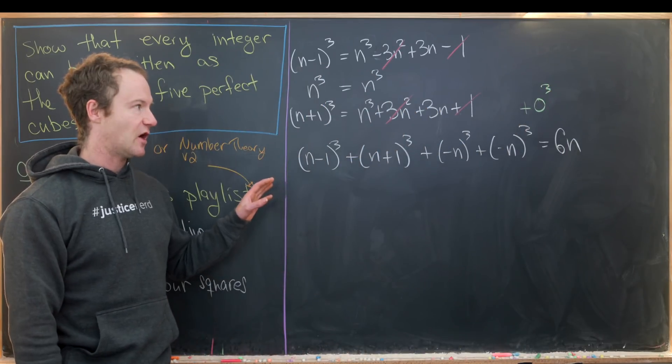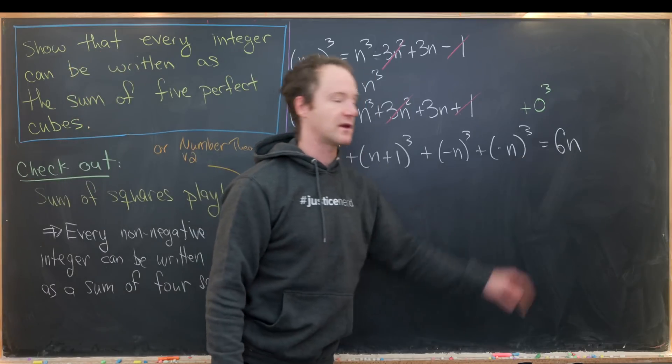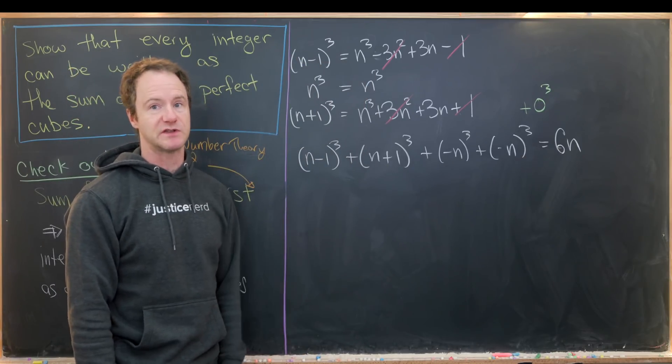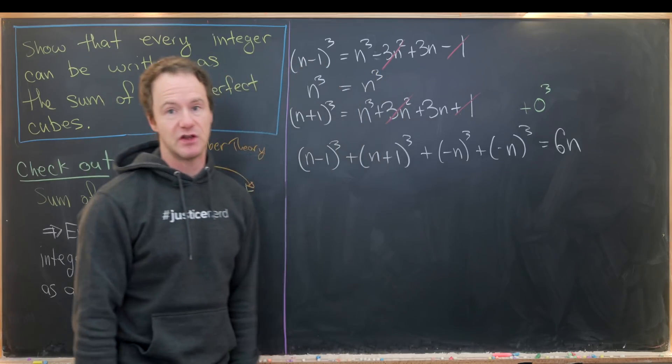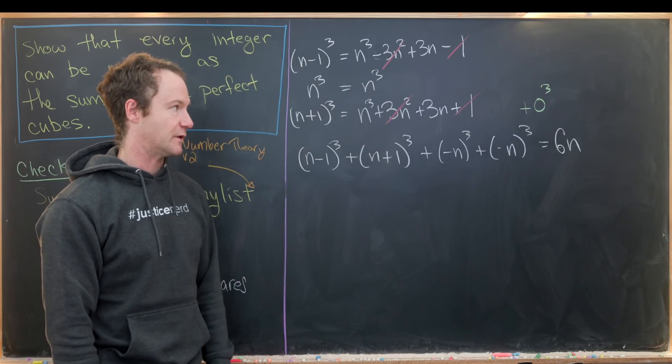This may not seem very helpful because we've only shown that one class of integers, those that are multiples of 6, can be written in this sum of five perfect cubes way. But this is actually more helpful than we might think.